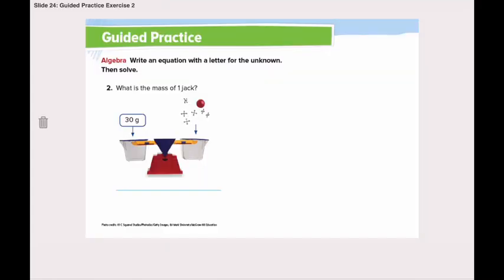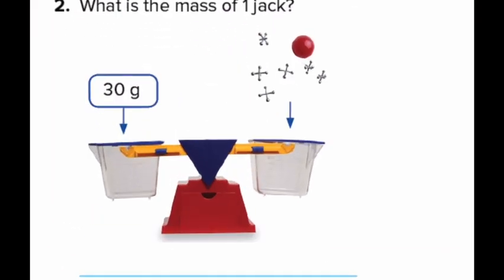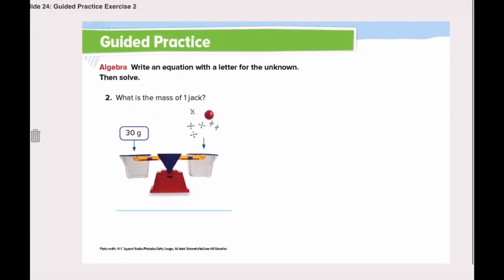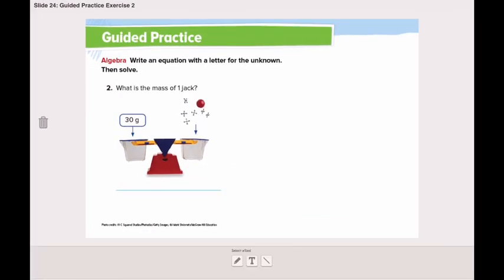Moving to number 2. What is the mass of 1 jack? Let's take a look at the picture. How many jacks do we have? Let's count them together. 1, 2, 3, 4, 5, 6. So we have 6 jacks. All of them together weigh 30 grams. How can we find the mass of only 1 jack?